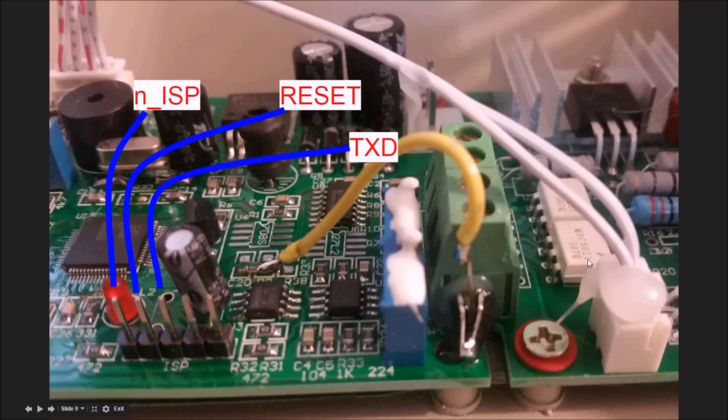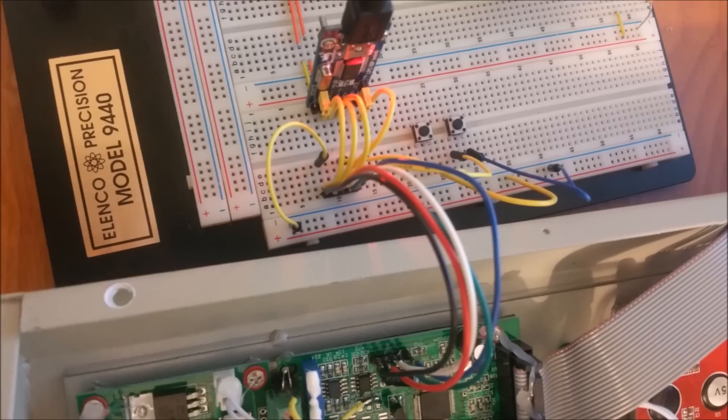If you position the board so that way the letters ISP and the silkscreen can be read upright, the pin order goes like this from left to right: NISP, RESET, TXD, RXD, and GND. Solder jumpers to each of these headers to break them out.